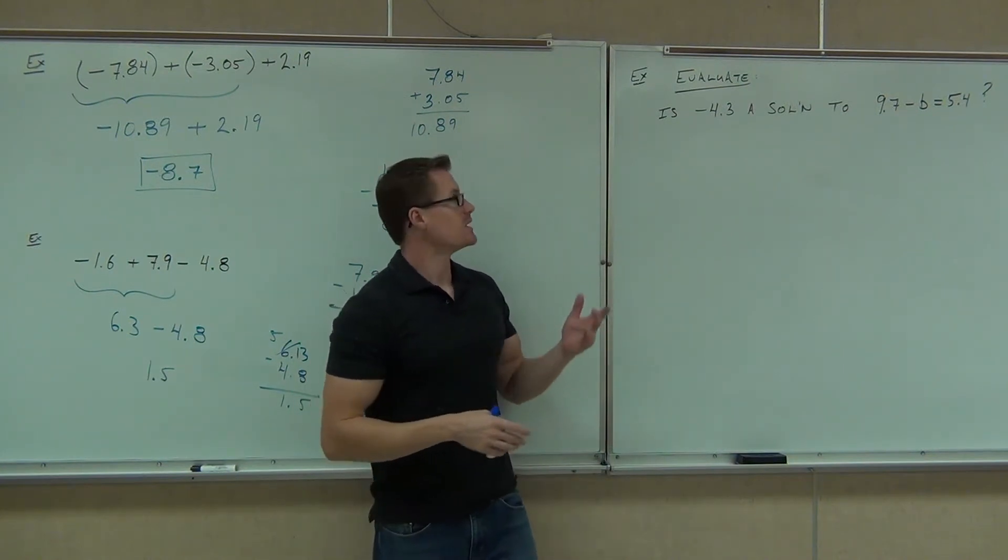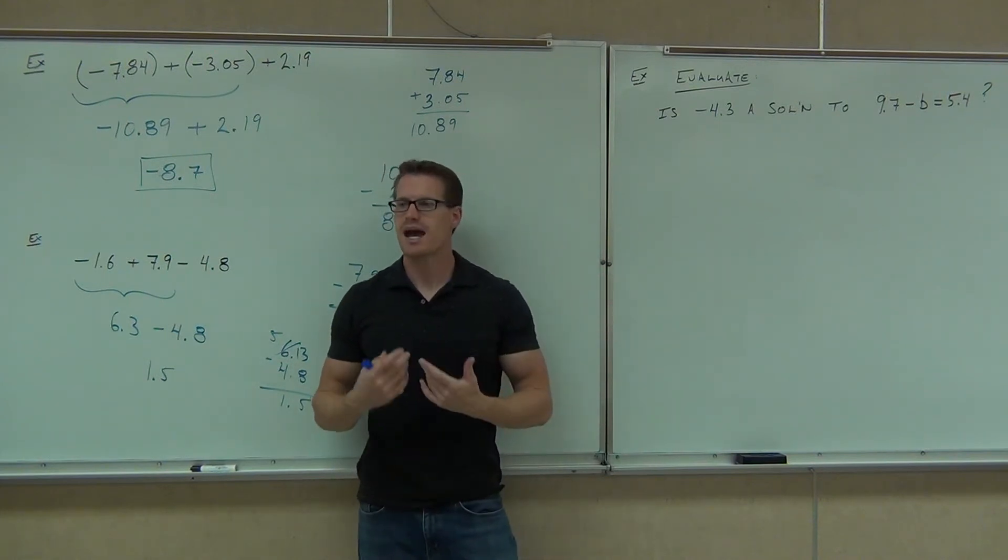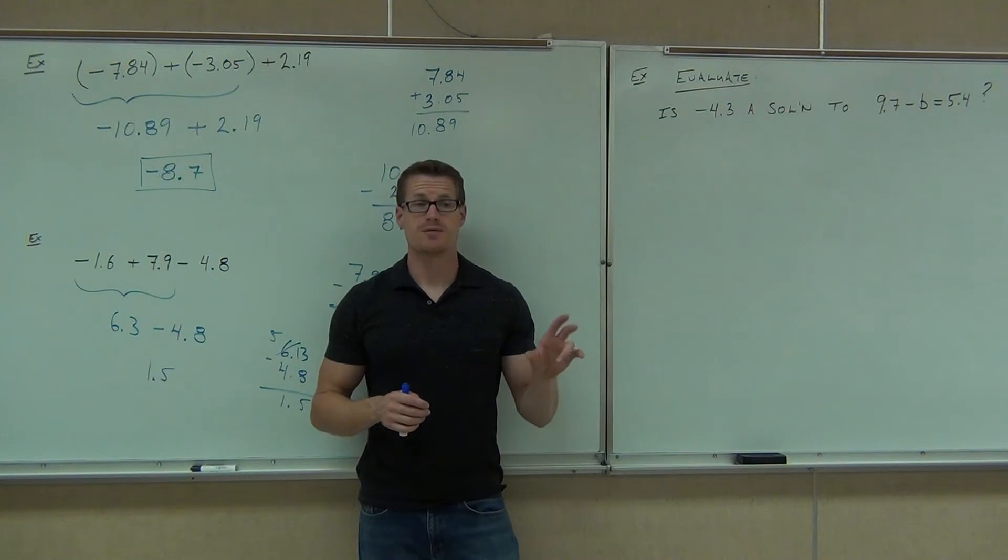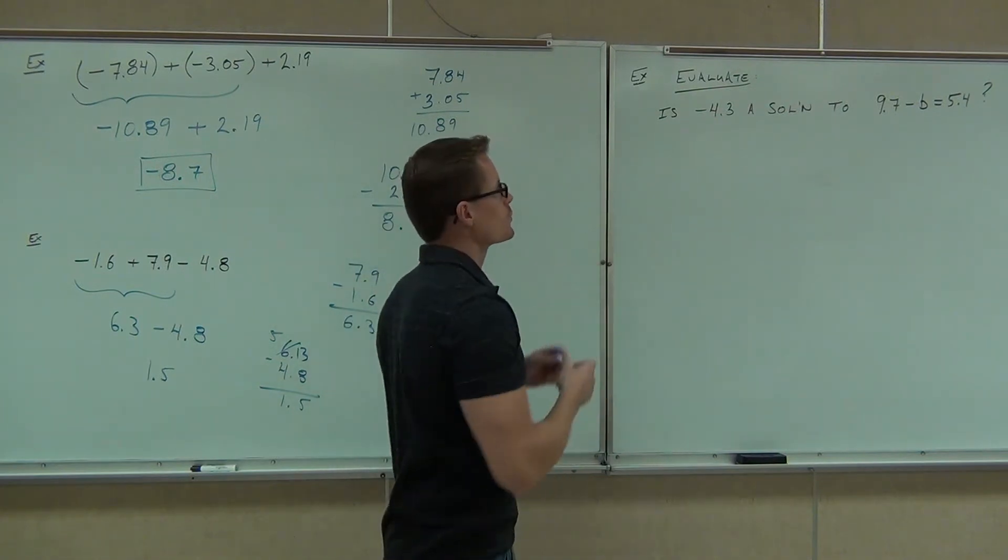It's just worded a little bit differently in the form of an equation. When you read, is negative 4.3 a solution to 9.7 minus b equals 5.4, what it's asking you to do is really evaluate that and see if the mathematical statement is a true one. If it is, then the number's a solution. If it's not, then that number's not a solution. Are you with me? So the idea of evaluation still holds for this.